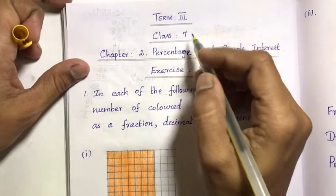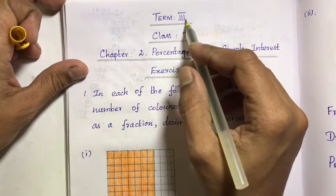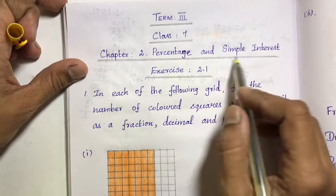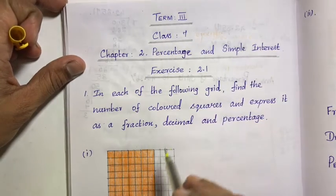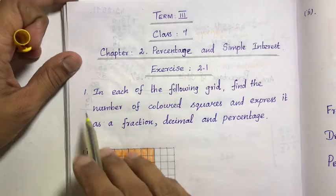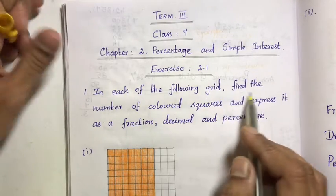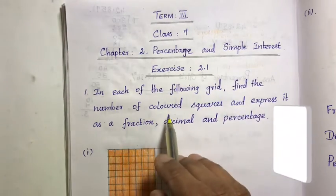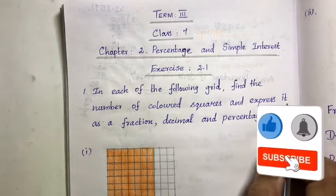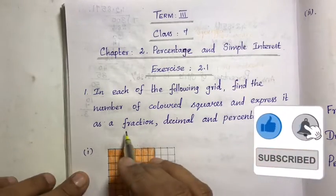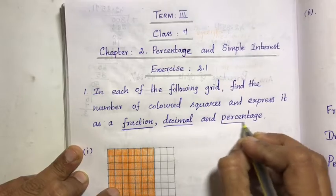Welcome. I am coming to the 7th standard Mathematics, Term 3, Chapter 2, Percentage and Simple Interest. This will be Exercise 2.1, starting the first question. In each of the following grids, find the number of colored squares and express it as a fraction, decimal, and percentage.